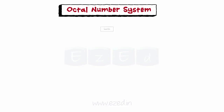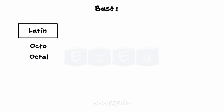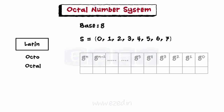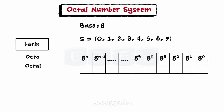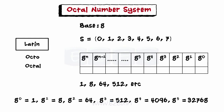Moving on to the octal number system. The word octal is derived from the Latin root octo, meaning 8. In this system, the base b equals 8, and we use 8 symbols to represent a number. Each position of the octal number represents a successive power of 8. From right to left, the successive positions of the octal number are weighted accordingly.